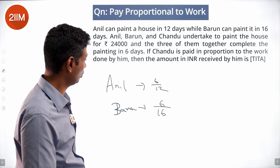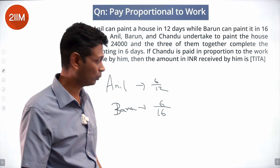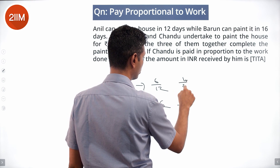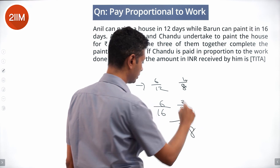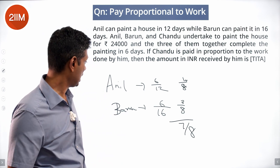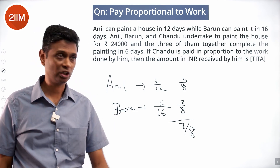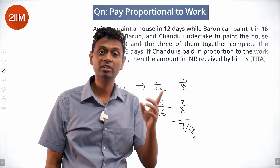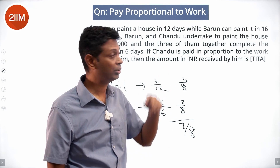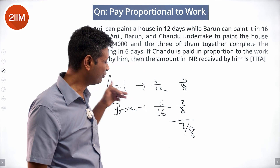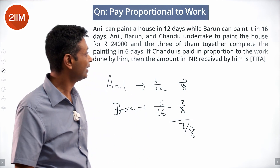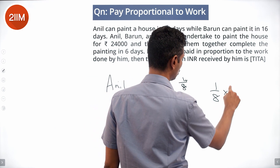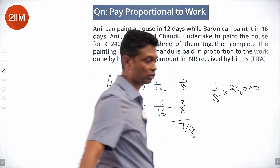The remaining is done by Chandru. 6/12 = 1/2, 6/16 = 3/8. Together Anil and Barun do 4/8 + 3/8 = 7/8 of the task. So Chandru does the remaining 1/8. He should get 1/8 of 24,000 = 3,000.